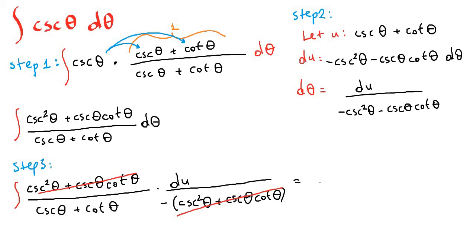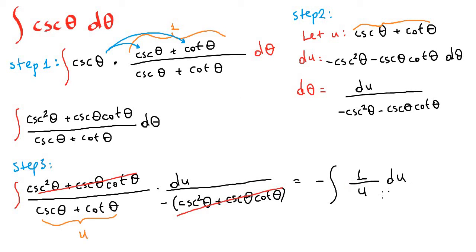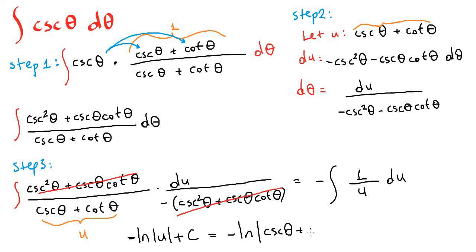We can pull the negative sign to the front, and we're going to have negative one over u — because cosecant theta plus cotangent theta is our u substitution. We know the antiderivative of one over u is ln of u plus C, and we have a negative sign in front. Bringing u back, our final answer is negative ln of cosecant theta plus cotangent theta plus C.